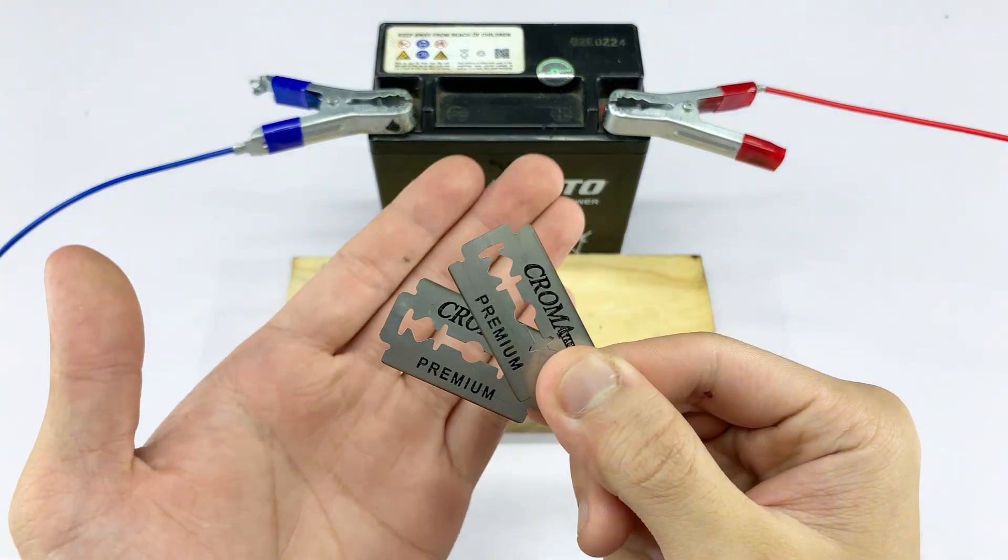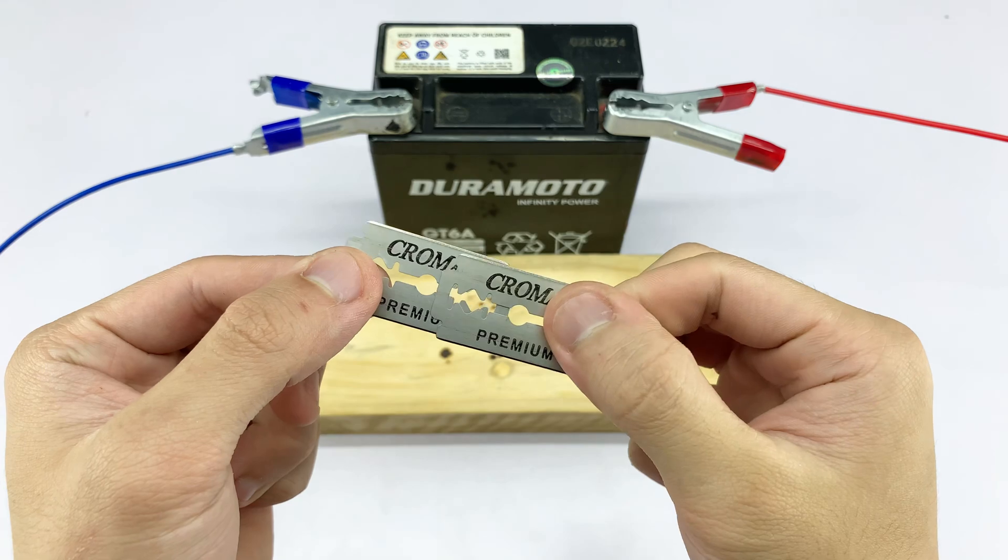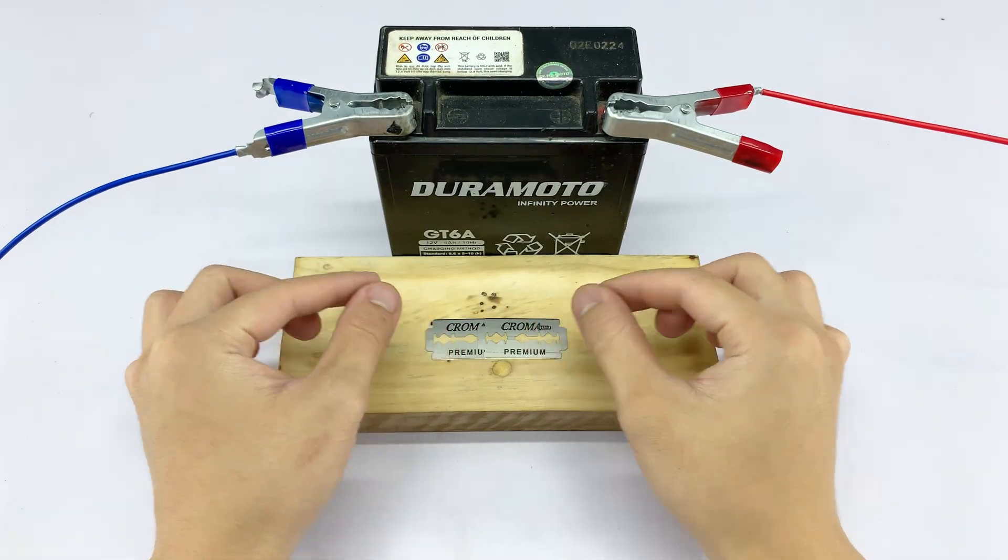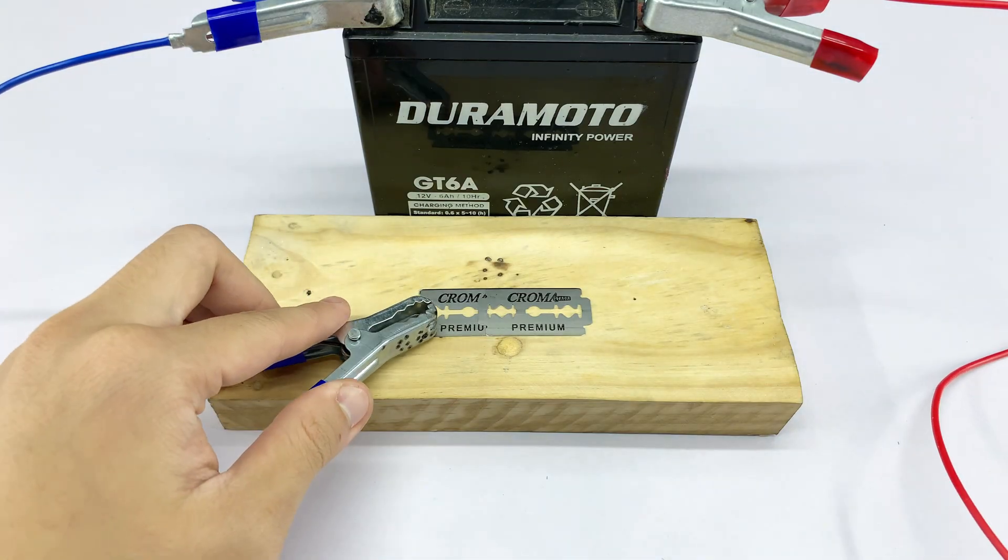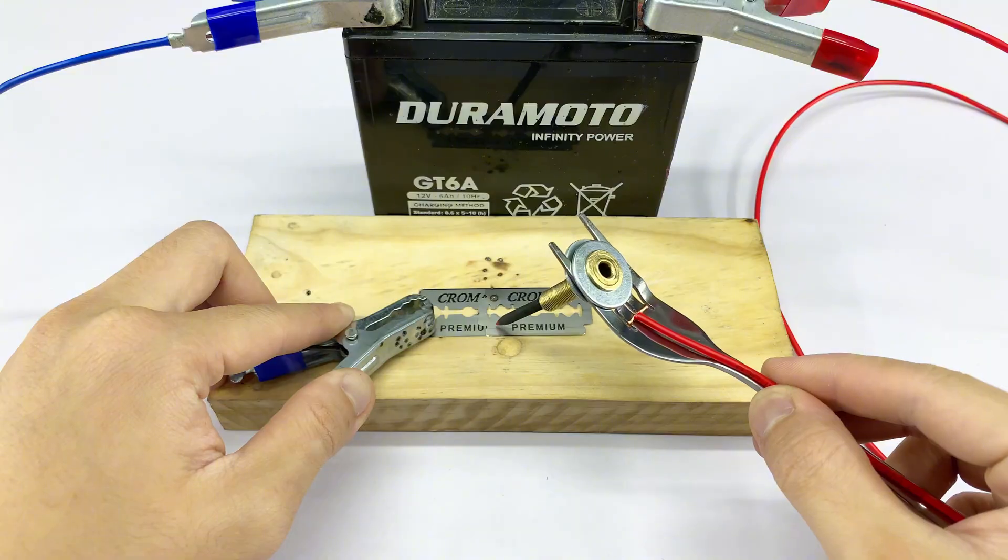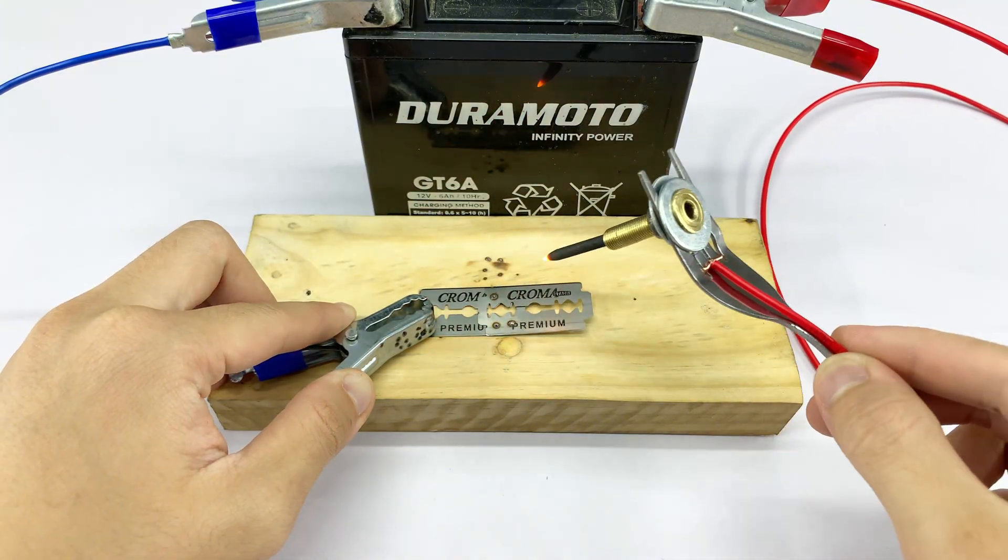I'm placing two razor blades on a piece of wood. This will be our first test material to see the power of our new tool. Watch closely as I touch the sharpened carbon rod to the razor blade. See how it instantly heats up and melts through the metal.